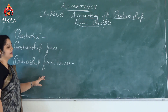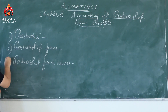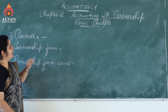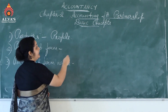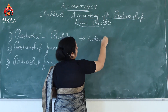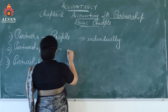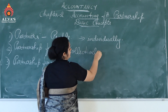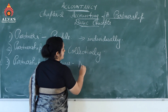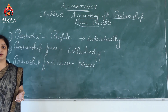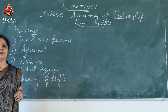Once the definition is over, let us see the meaning of three terms. First, the meaning of 'partner' — people who join a partnership firm are called partners. Individually, we call them partners; collectively, we call them the partnership firm. The name under which the business is run — for example, XYZ firm — is called the partnership firm name. Now going to the next topic: features of partnership business.